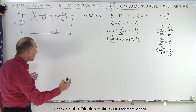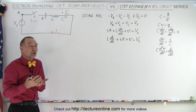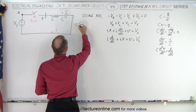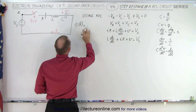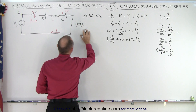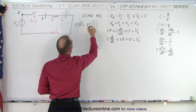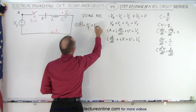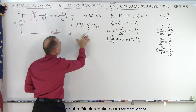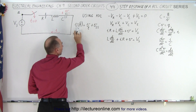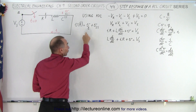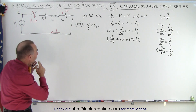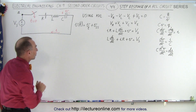What will the voltage as a function of time look like? Because that's what we're trying to find. The voltage as a function of time is going to be equal to the transient voltage plus the steady-state voltage. We're going to find an equation that gives us both the transient voltage while things are settling down and the steady-state voltage, and they're going to be added together.